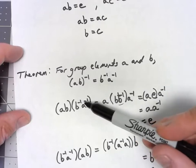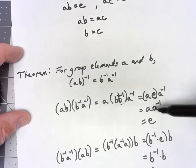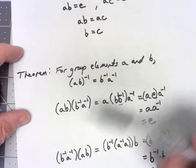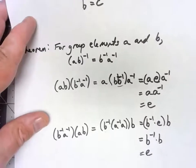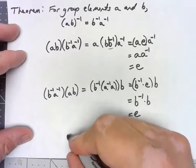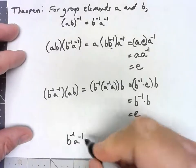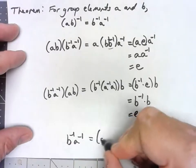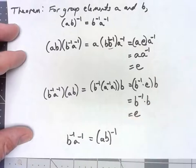So multiplying by B inverse A inverse on the right gave us the identity, multiplying by B inverse A inverse on the left gave us the identity. Therefore B inverse A inverse has to equal the inverse of AB.